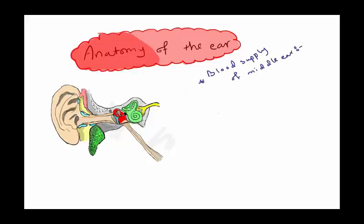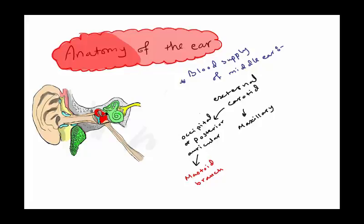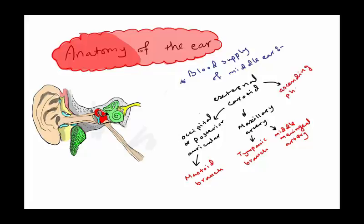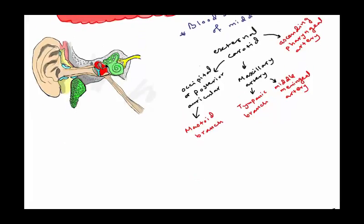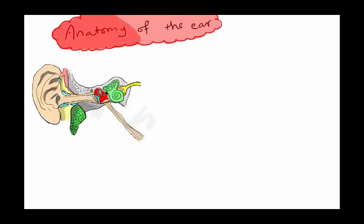Regarding the blood supply of the middle ear: from the external carotid artery, the occipital or posterior auricular artery gives the mastoid branch. From the maxillary artery there is the tympanic branch and the middle meningeal artery. There is also the ascending pharyngeal artery. From the internal carotid artery there are the tympanic branches. That covers all the middle ear structures, contents, and boundaries. Hope you enjoyed the video — thanks everyone and have a nice day.